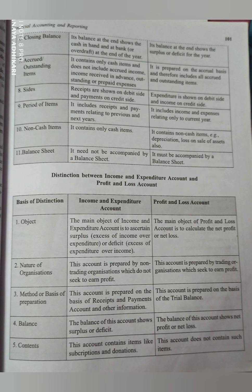Closing balance: receipts and payments account shows cash in hand and at bank at the end of the year, whereas income and expenditure account's closing balance shows surplus or deficit. Accrued or outstanding items: receipts and payments account contains only cash items and does not include accrued income, income received in advance, or outstanding prepaid expenses, but income and expenditure account is prepared on the accrual basis and includes all accrued and outstanding items.